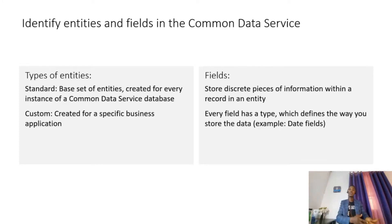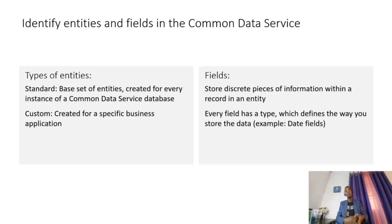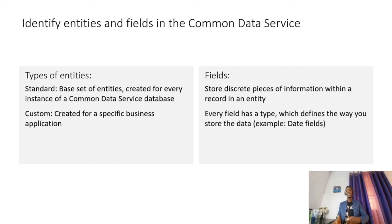Fields store discrete pieces of information within a record in an entity — they are simply called columns now. Every field has a type that defines how data is stored. For example, there can be a date field, a number, a decimal number, text, or a choice data type.